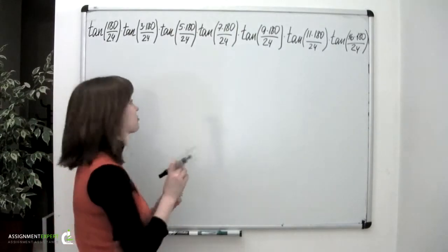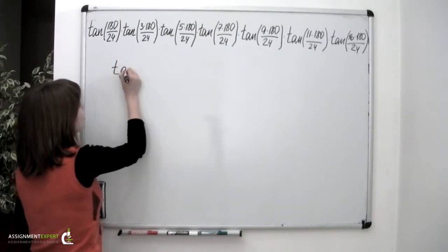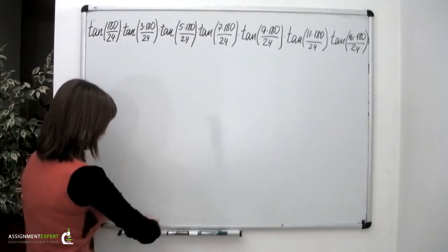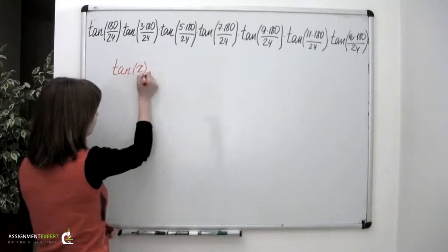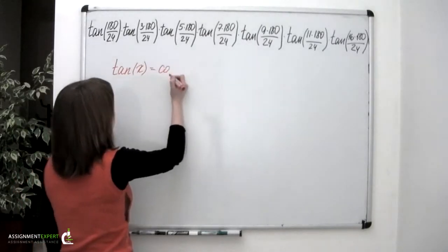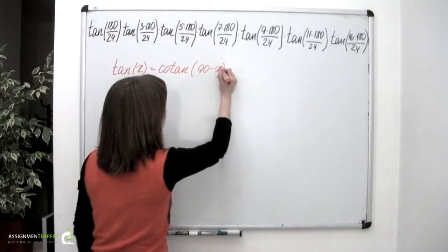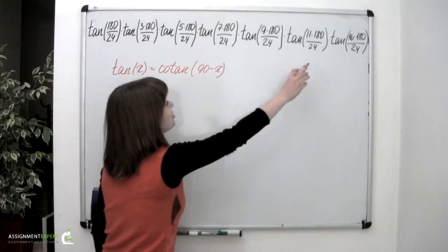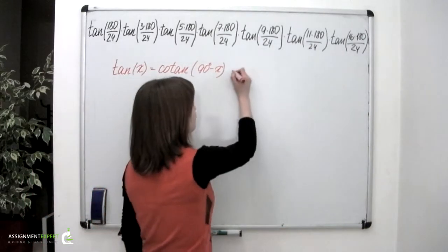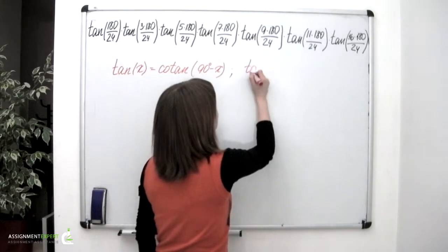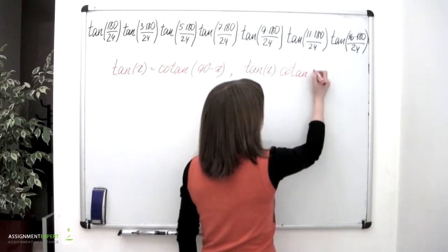First we should recall a couple of simple formulas. There is the one stating that tangent of x is actually the same as the cotangent of 90 minus x — note that all angles here are measured in degrees. And then there is another formula according to which tangent of x multiplied by cotangent of the same argument, cotangent of x, equals 1.